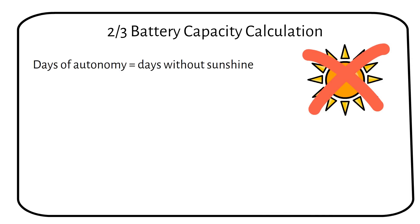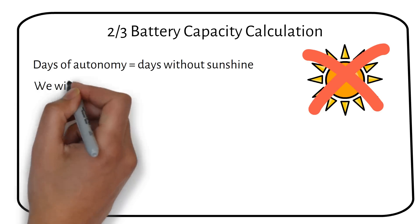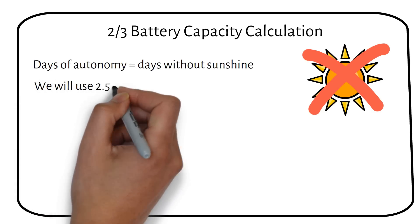Even when it's cloudy, you will still get some power from the solar panels. So let's use an autonomy of 2 and a half days.